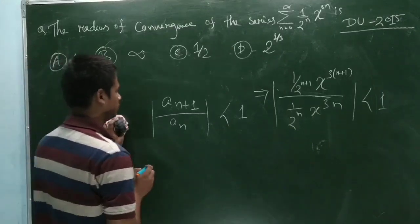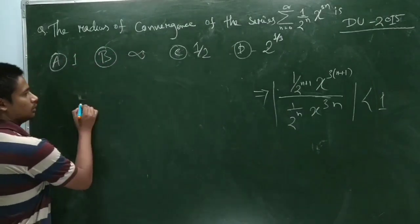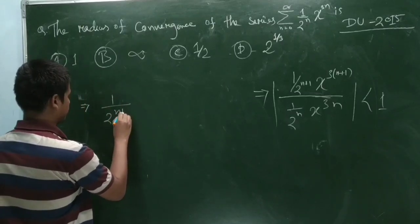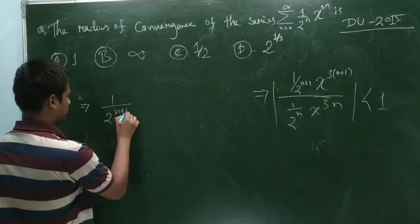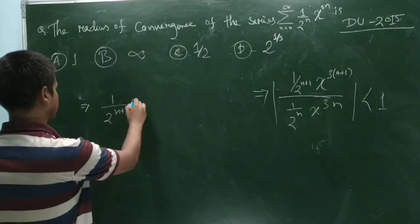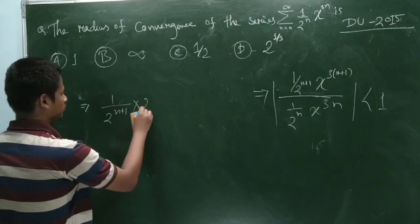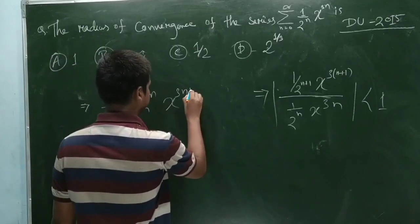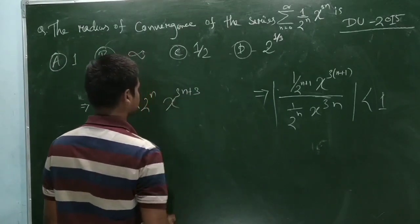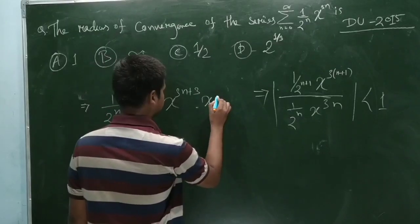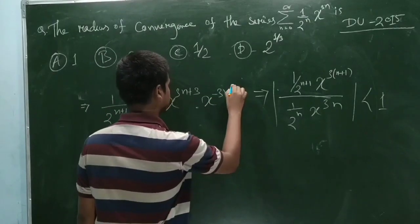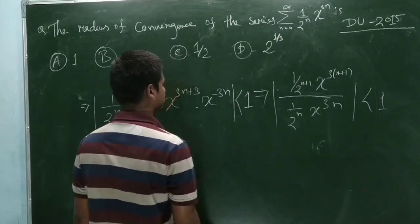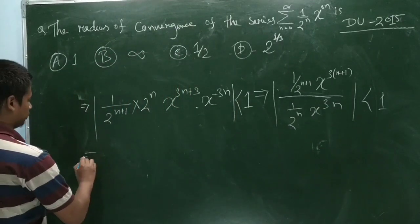From here, simplifying: 2 to the power n and x to the power 3n cancel, leaving x to the power 3n+3 minus 3n, which gives x to the power 3, and 1 by 2 times x cubed is less than 1.